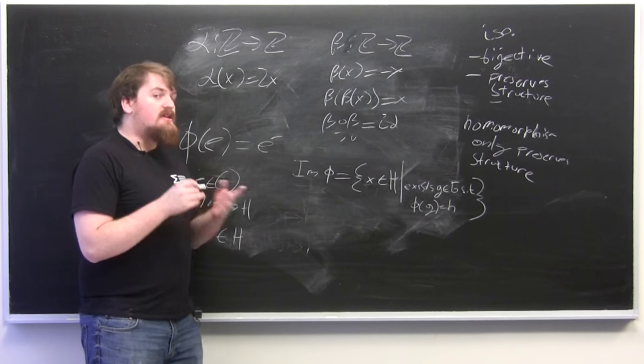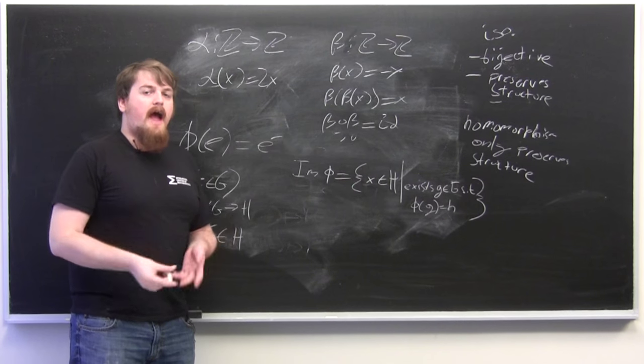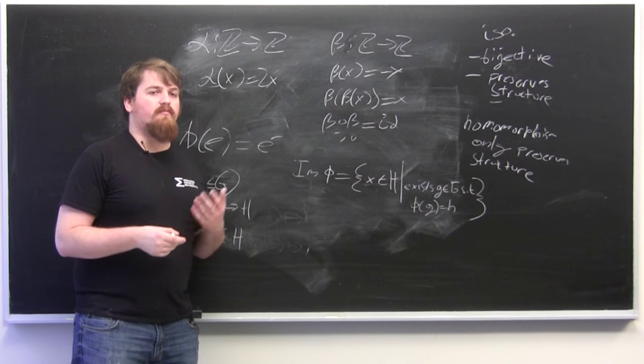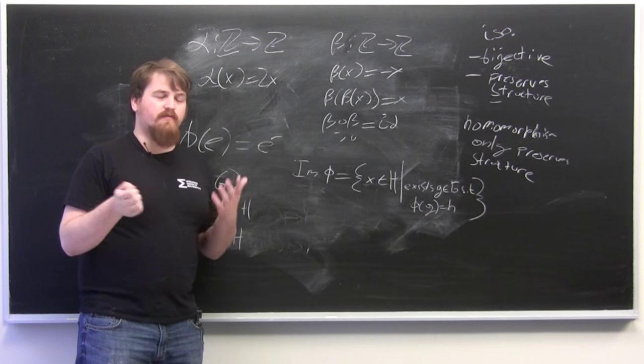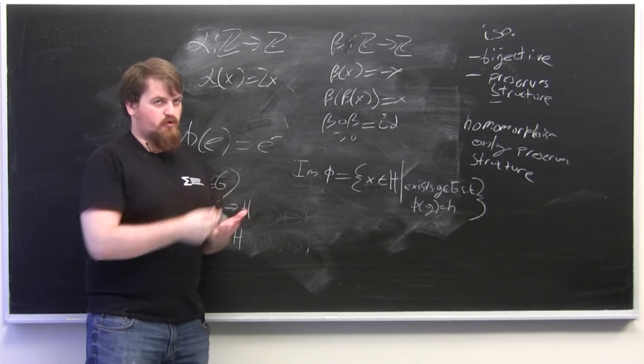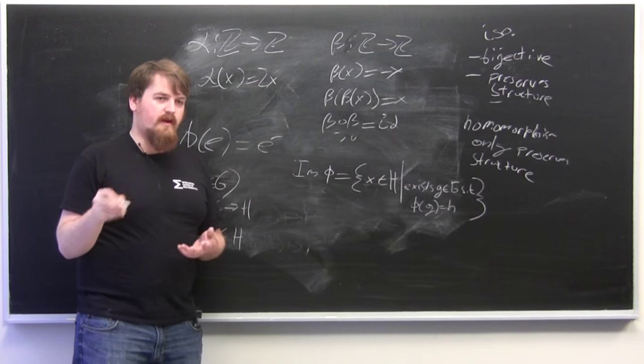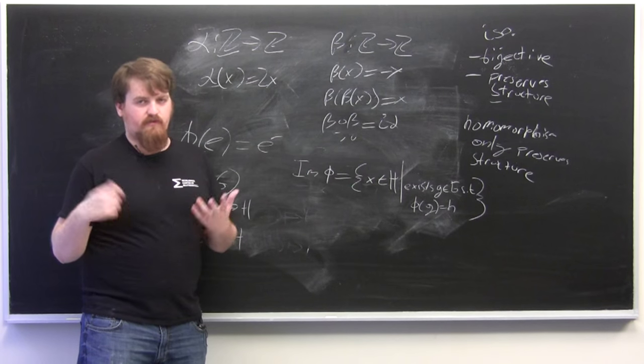Finally, it's noteworthy that any two isomorphic groups, groups which have an isomorphism between them, have to be of the same size if they're finite and the same sort of cardinality which is a set theoretic version of size if they're infinite. So you can't have an infinite group be isomorphic to a finite group and you can't have a group of size seven be isomorphic to a group of size five.